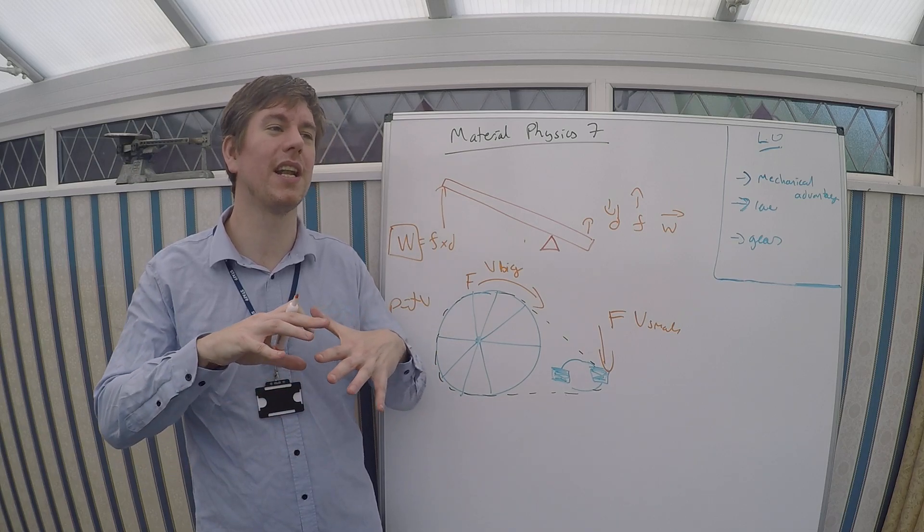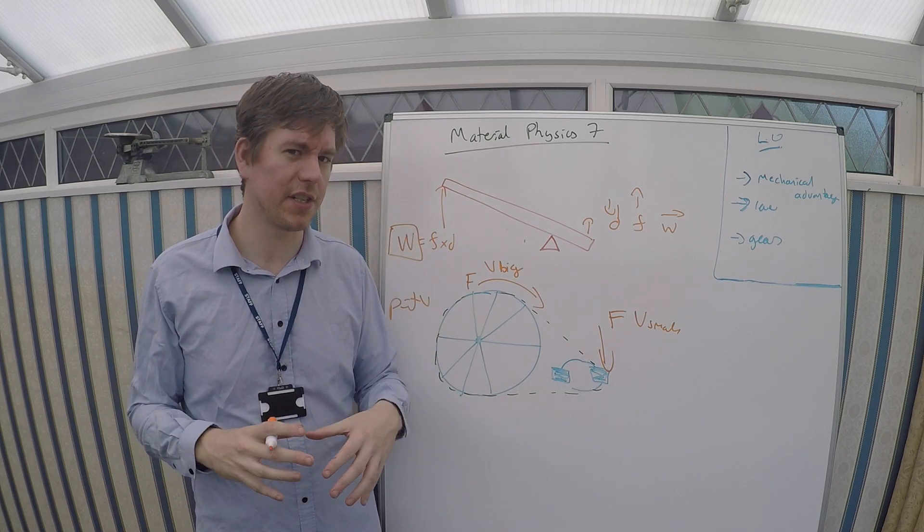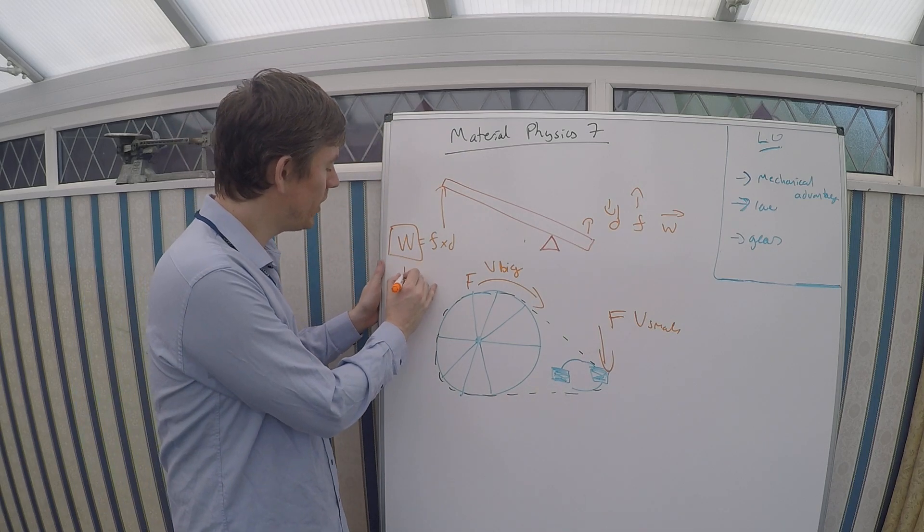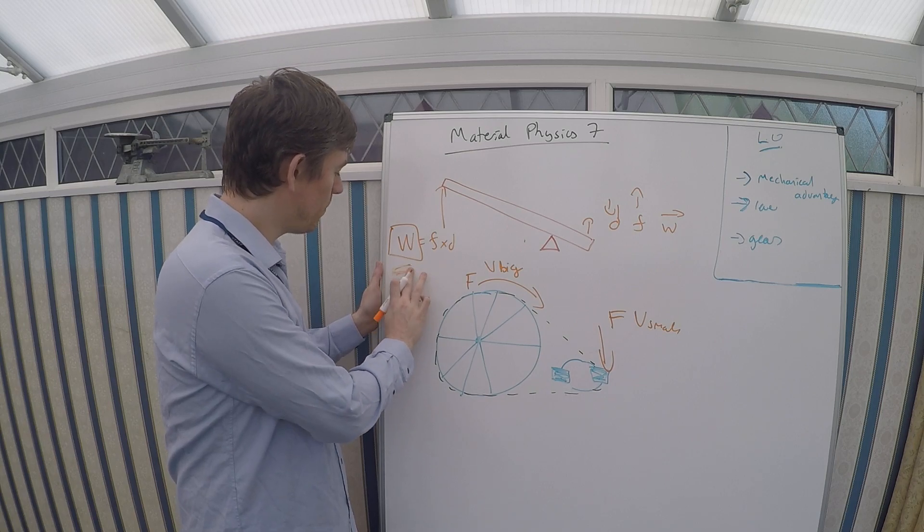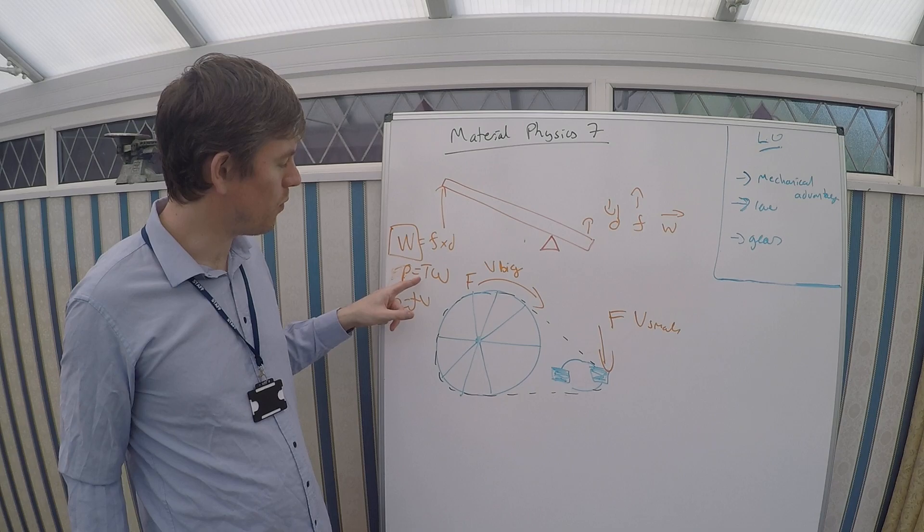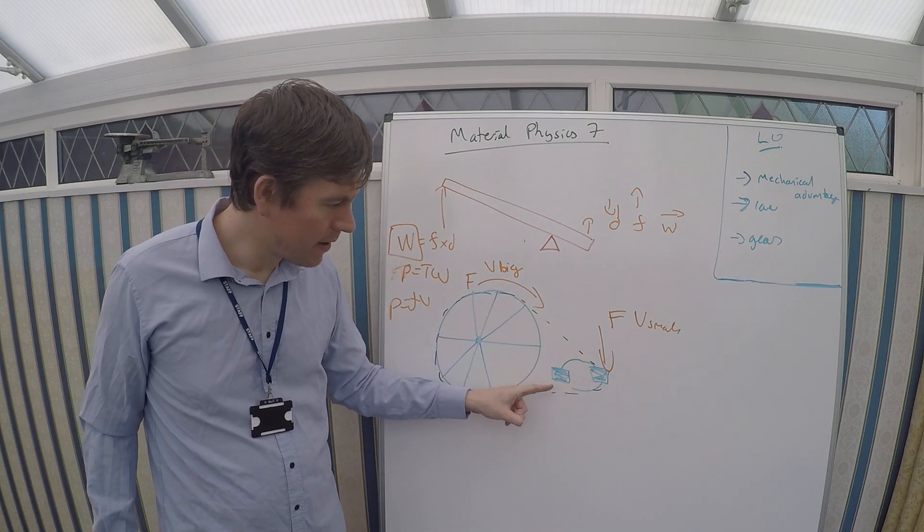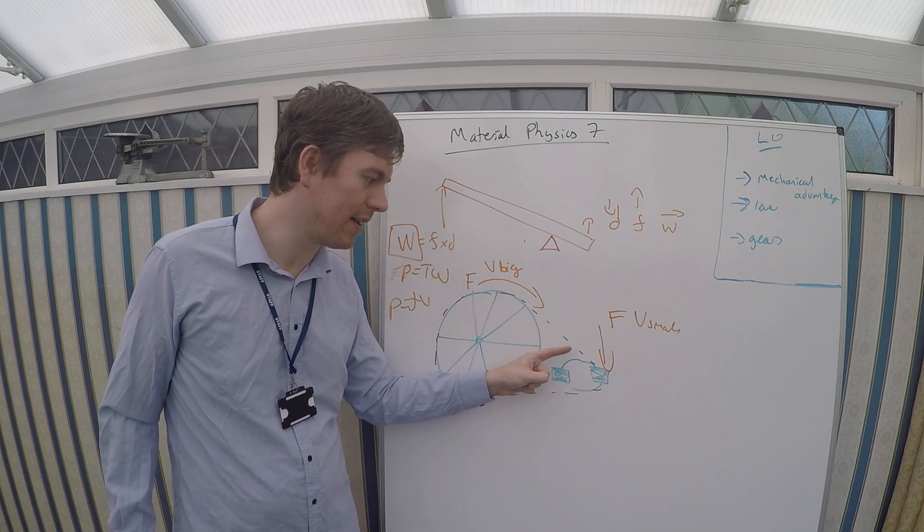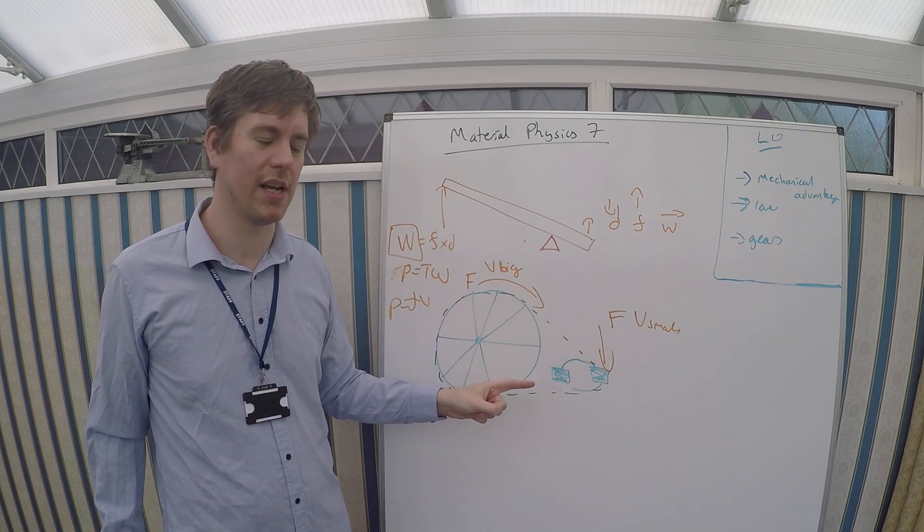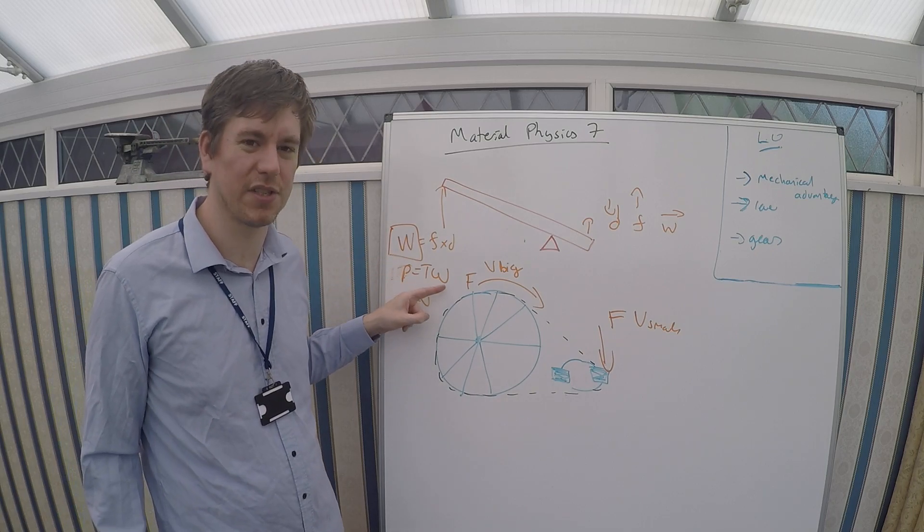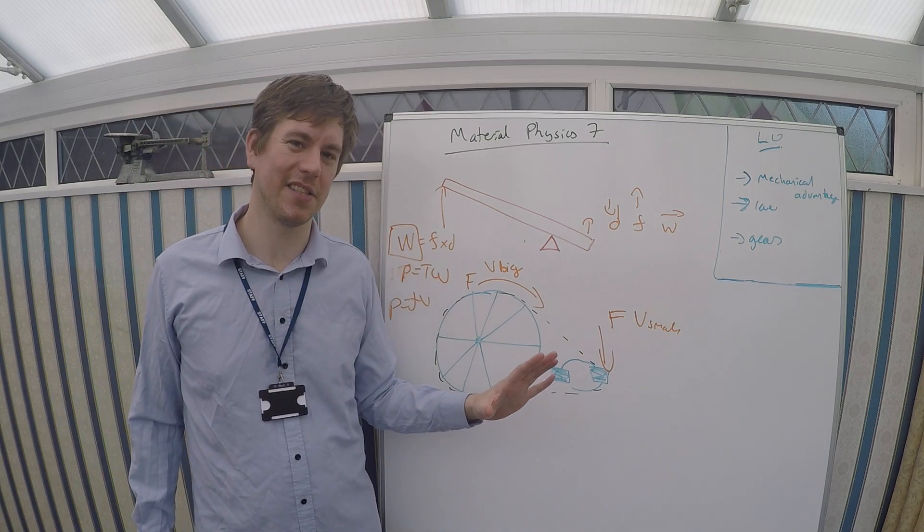Now if we're going to use the language of turning physics, of angular momentum, we could instead of saying power is force times velocity, we can say power is torque times angular velocity. It's exactly the same thing. Big torque here, small torque here. Small angular velocity here, big angular velocity here. So you could equally write it as power is torque times angular velocity instead. It gives you exactly the same result.